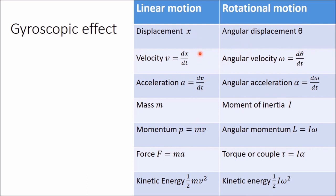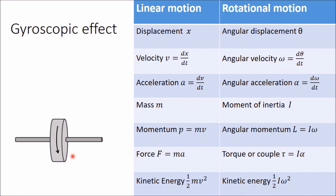Vector quantities are represented by a line with an arrowhead where the length of the line gives the magnitude and the direction is given by the arrowhead. Similarly, angular displacement, angular velocity, angular acceleration, angular momentum, and torque are all vector quantities. For example, a disc rotating in an anti-clockwise direction when viewed from one side has some angular velocity. To represent this angular velocity as a vector, draw a straight line perpendicular to the surface, i.e., along the axis of rotation.